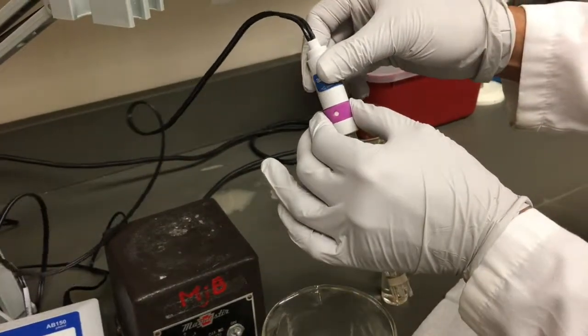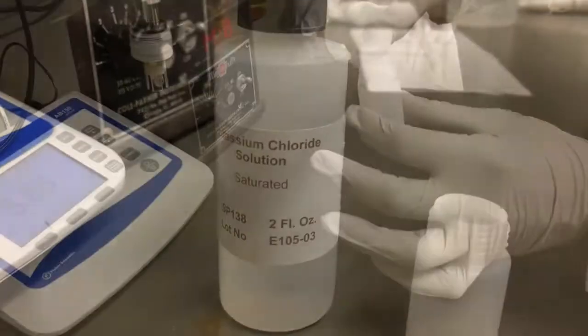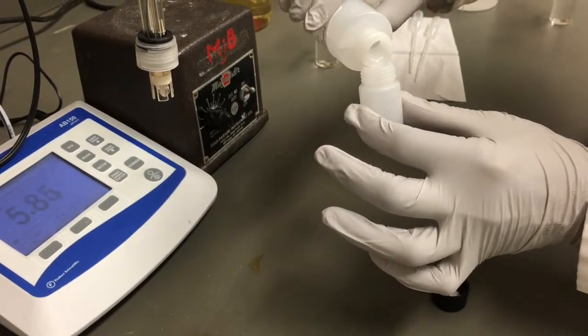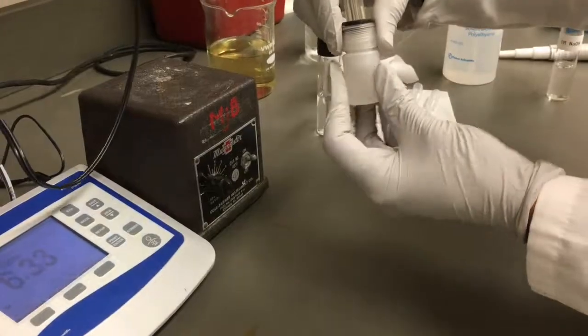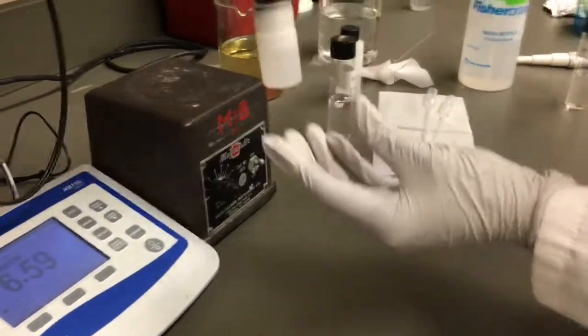As our storage solution, the 4 molar potassium chloride, was getting low, we will refill the bottle so the tip is completely submerged. Carefully replace the bottle over the probe so as not to crush the tip.